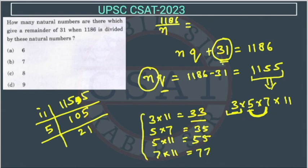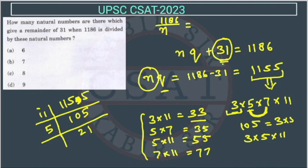Single digit factors we cannot take. For three-digit combinations: 3×5×7 = 105, and 3×5×11 = 165. Other three-factor combinations are also possible, like 3×7×11 and 5×7×11.